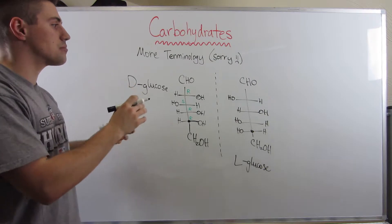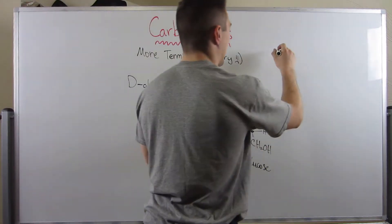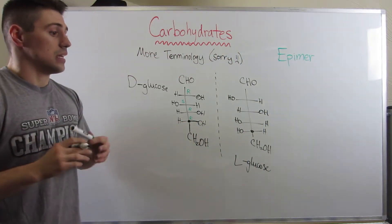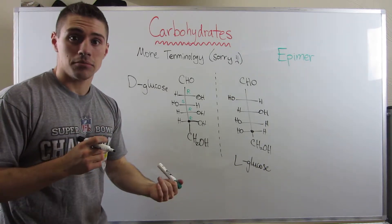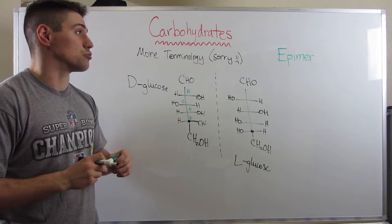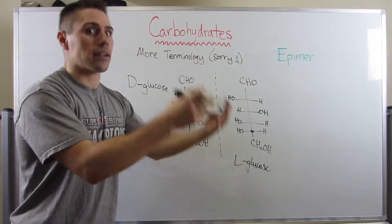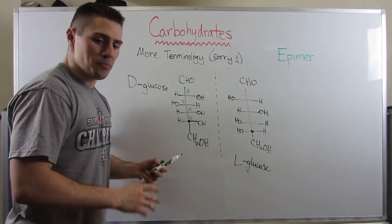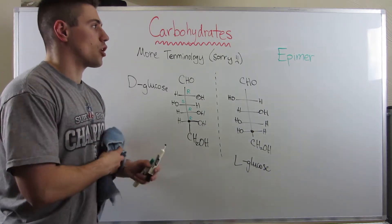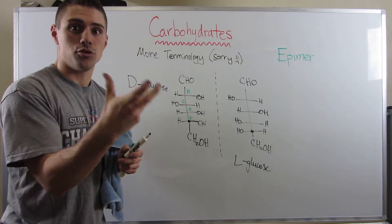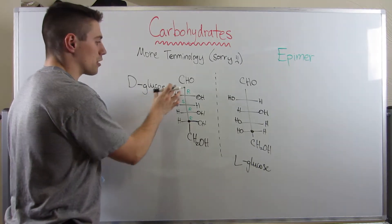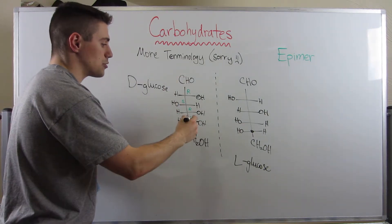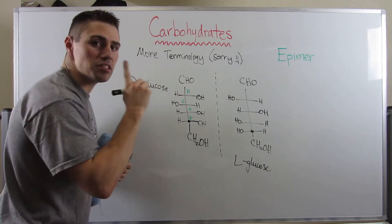A concept I want to introduce is what is called an epimer. In my experience with epimers, it was just something you had to know — you might be asked to draw an epimer of, say, galactose. An epimer is a pair of carbohydrates being compared. So if I wanted to draw an epimer of D-glucose, all it is is a carbohydrate that differs in stereochemistry at one stereocenter.